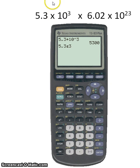So let's do 5.3 times 10 to the third times 6.02 times 10 to the 23rd. And let's type in this number using our E button. So here we go, 6.02, now here's where the E button comes in, press 2nd and then E, and then to the 23rd.